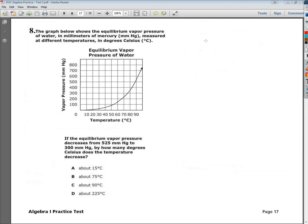The question says, the graph below shows the equilibrium vapor pressure of water in millimeters of mercury. Millimeters of mercury is how you measure vapor pressure of water, measured at different temperatures in degrees Celsius.